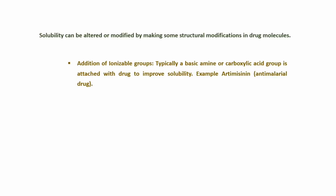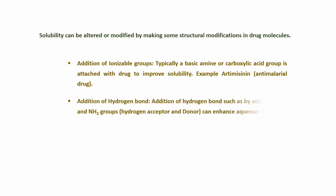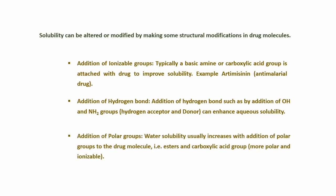किसी drug की solubility को alter किया जा सकता है by making some structural modifications in drug molecules। जैसे: addition of ionizable groups (जैसे basic amines और carboxylic groups); addition of hydrogen bond donors/acceptors जिससे aqueous solubility बढ़ती है — हालांकि hydrogen bond के साथ complexation और chelation जैसी दूसरी properties भी होती हैं, इसलिए केवल hydrogen bond बढ़ाने से हमेशा biological action नहीं बढ़ेगा; और addition of polar groups जैसे ester और carboxylic groups से solubility बढ़ती है।